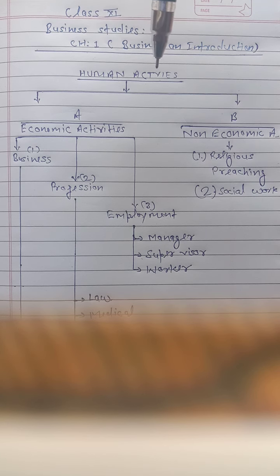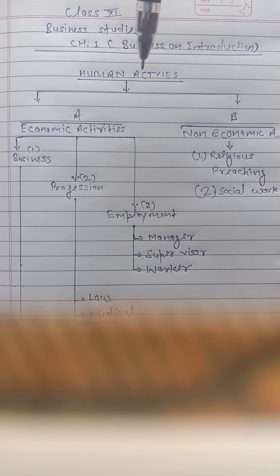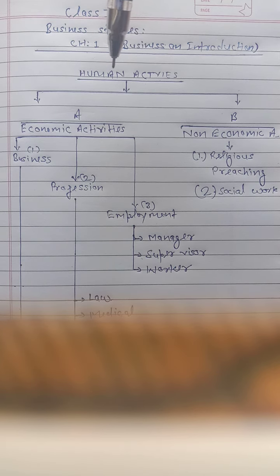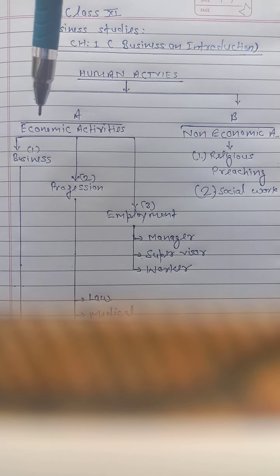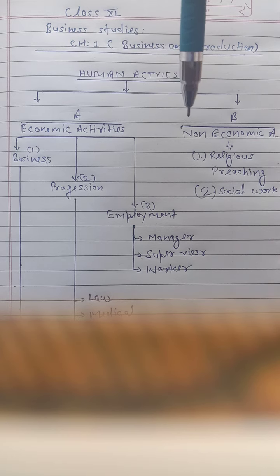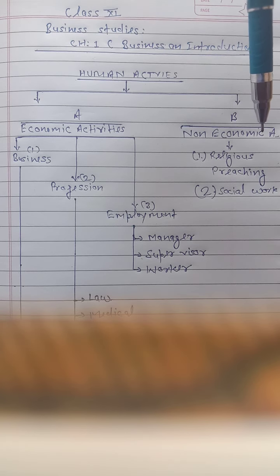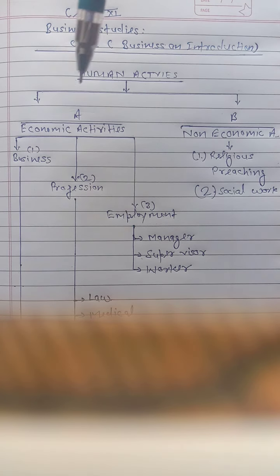Human activities means what activities, what actions, what work we do in our general life — these are known as human activities. These human activities may be economic activities or non-economic activities.